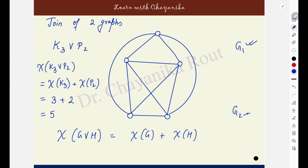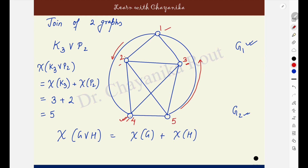If you see the join of the two graphs and find out the chromatic number: I will use colors 1, 2, and 3 here because this is the K3 in my graph. This vertex is adjacent to both vertices having colors 2 and 3, so I cannot use colors 2 and 3. This vertex is also adjacent to the vertex with color 1, so I cannot use colors 1, 2, or 3 — I am bound to use a different color 4. Coming to this next vertex: it is adjacent to the vertex of color 4, color 3, color 2, and color 1. None of the available colors is now available, so I need a new color — color 5. The chromatic number of the join is 5.